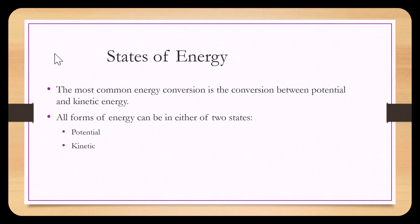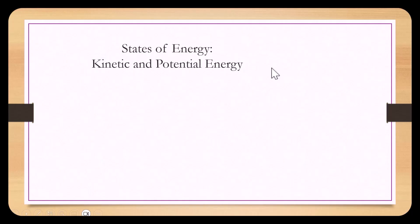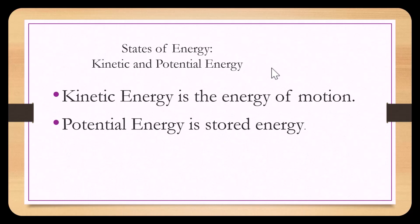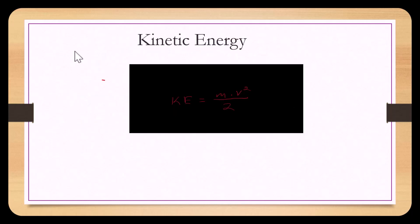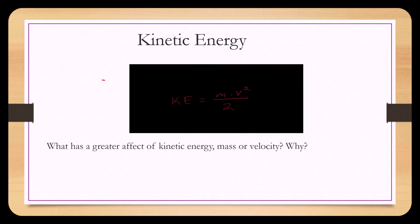The most common energy conversion is the conversion between potential and kinetic energy. All forms of energy can be in either of two states: potential or kinetic. Kinetic energy is the energy of motion. Potential energy is stored energy. The equation for kinetic energy is KE equals m for mass times v squared for velocity, divided by 2. Velocity has an exponent, meaning that velocity would have a much greater effect on kinetic energy than mass.